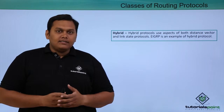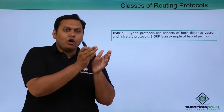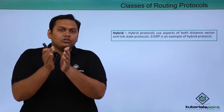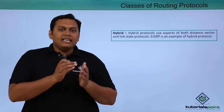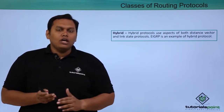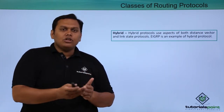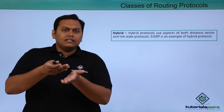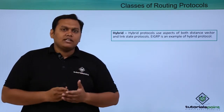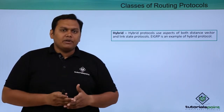The third class is the hybrid protocol. It has the features of both distance vector and link state protocols. The best example is EIGRP — the Enhanced Interior Gateway Routing Protocol. We will be discussing EIGRP in the next videos, covering its features and the tables it maintains, which include information from both distance vector and link state protocols.